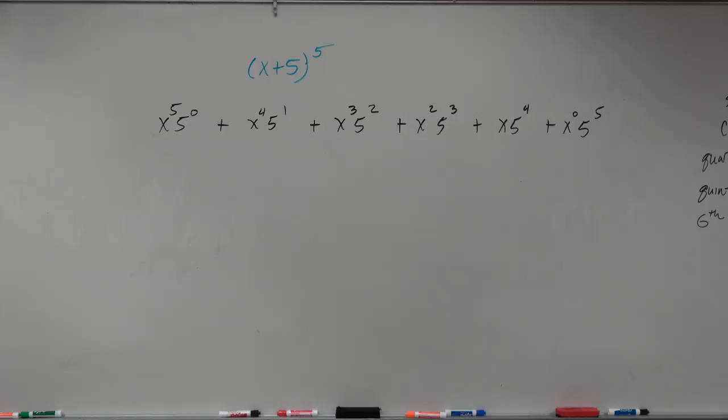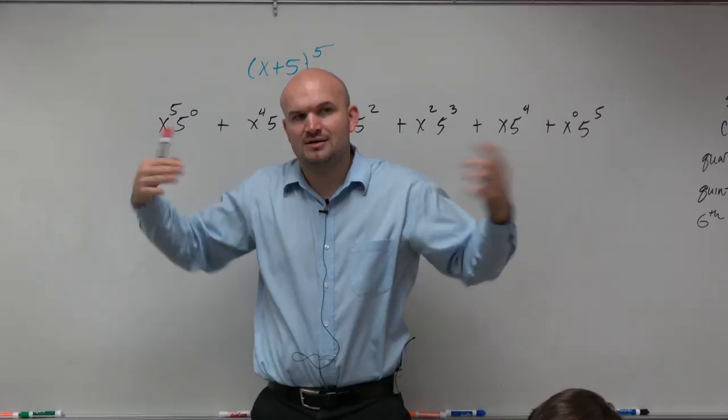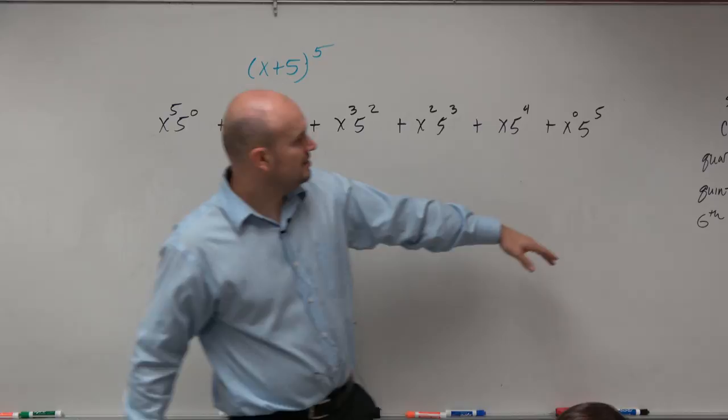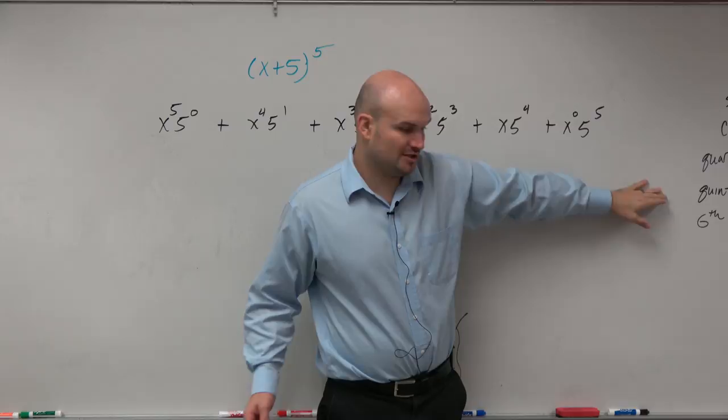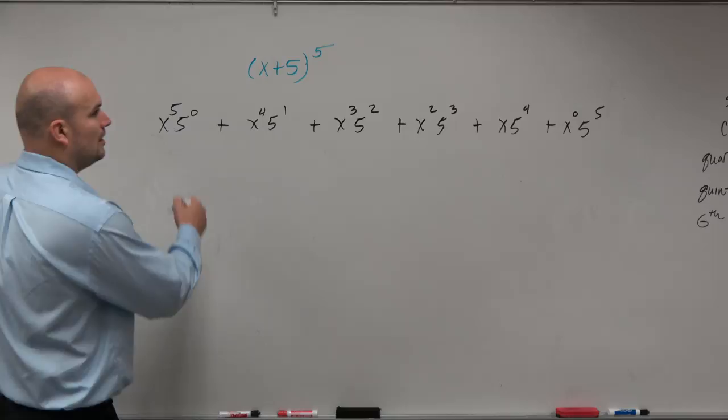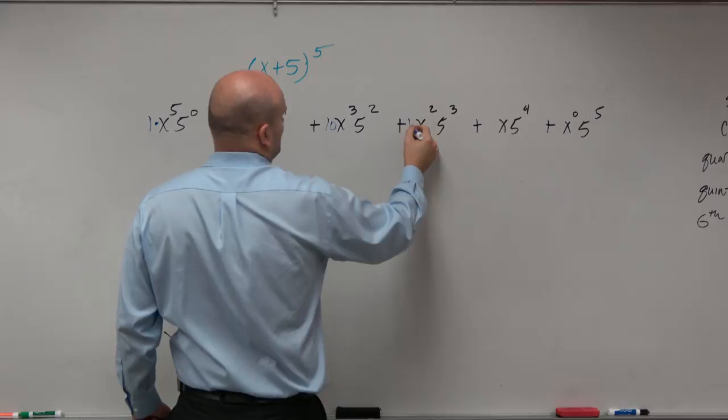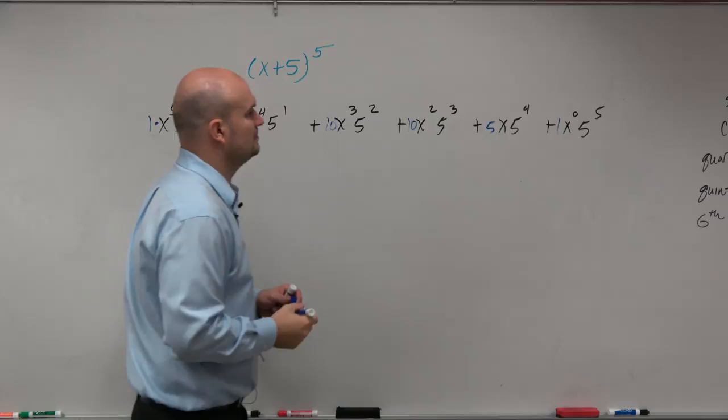Now, the next portion, and again, also remember guys, x to the 0 is 1, 5 to the 0 is 1. So they really don't, but I like to write them in there so I remember this. The next example is this is raised to the fifth power. So I go down on my fifth row on the Pascal's triangle, and I realize that the coefficients are going to be 1, 5, 10, 10, 10, 5, and 1.